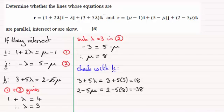Just as well we didn't substitute directly because we'd have ended up with 18 = -38, which would have seemed odd. So we can see that 3 + 5λ does not equal 2 - 5μ. What does that imply? The lines must be skew. The lines are skew.